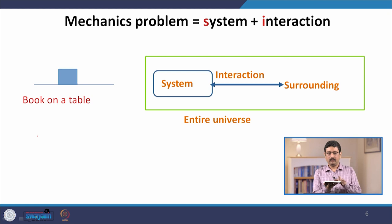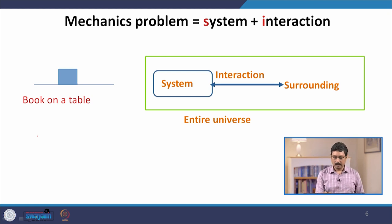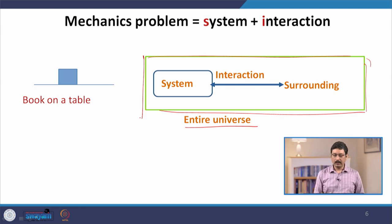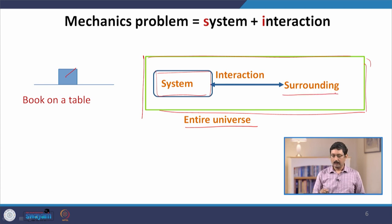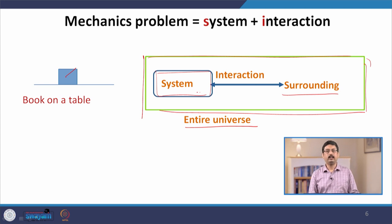Everything else outside the book is the surrounding. What we are doing is dividing the entire universe into two pieces. The first piece is the system — in this example, the book. And everything else outside the book is called the surrounding. We break this into two parts because the surrounding and system interact with each other.